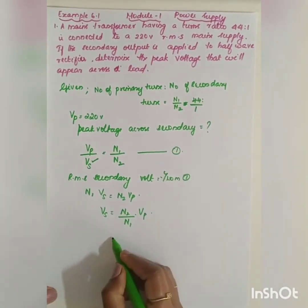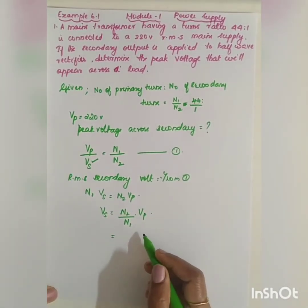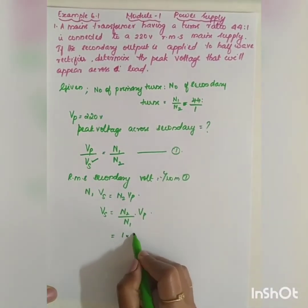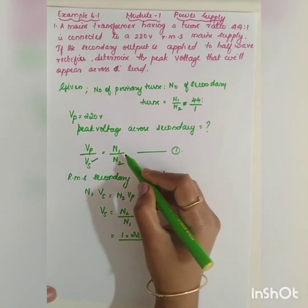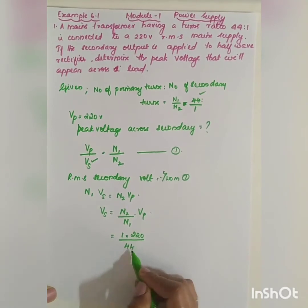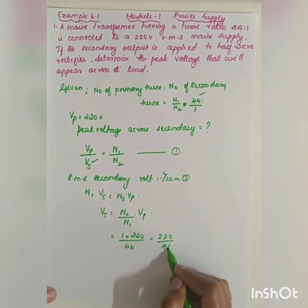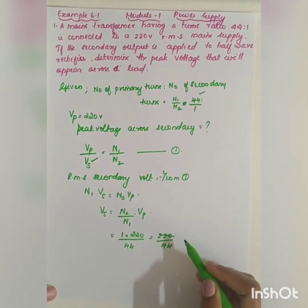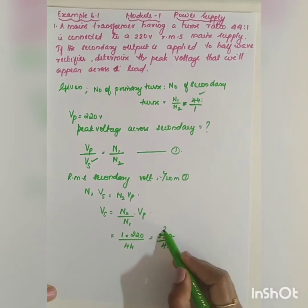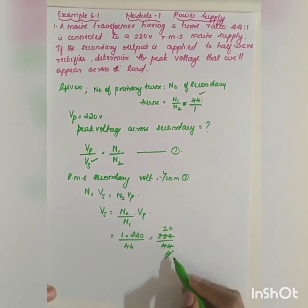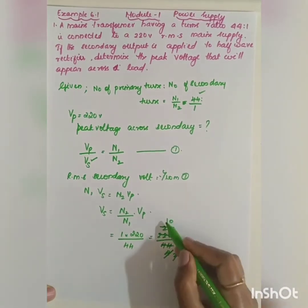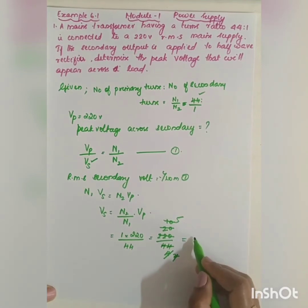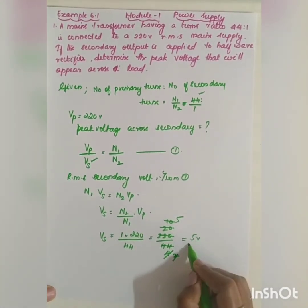N2 is equal to 1, VP is equal to 220 volt, and N1 is equal to 44. So Vs equals 220 divided by 44. Cancelling by 11 gives 220 divided by 44, which simplifies to 5. Therefore, the RMS voltage across the secondary is equal to 5 volt.